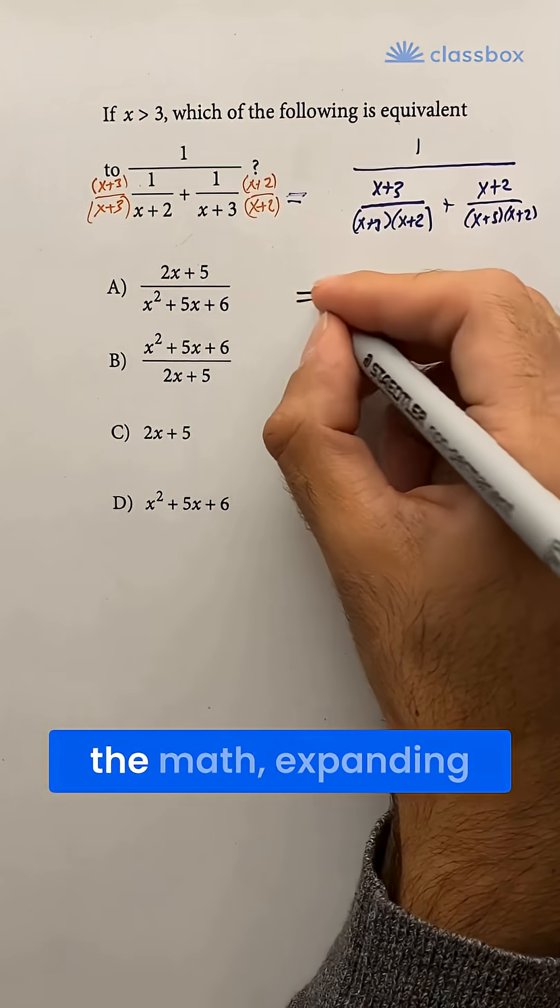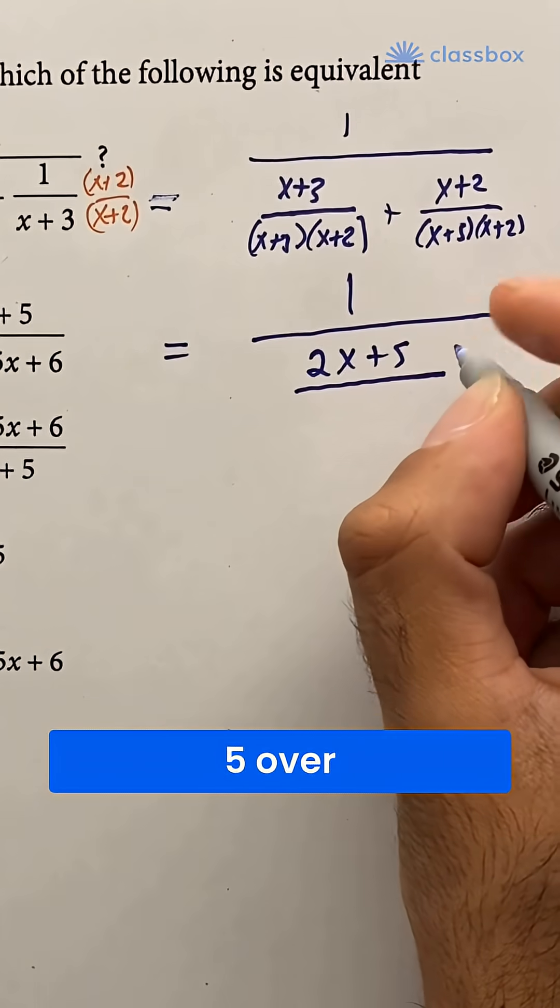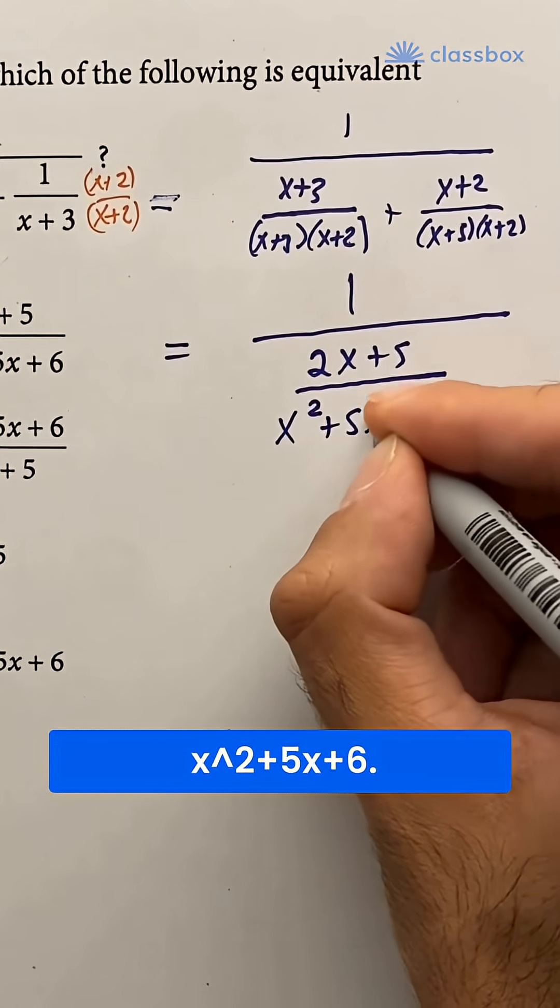And then doing the math, expanding the brackets, we get 2x plus 5 over x squared plus 5x plus 6.